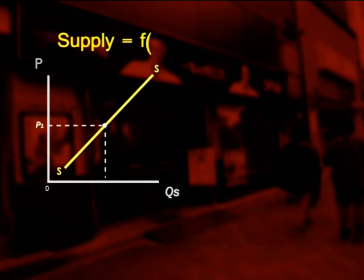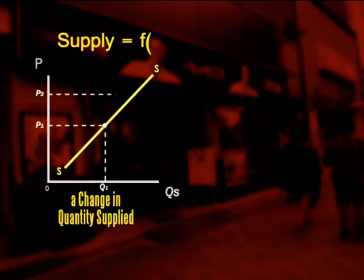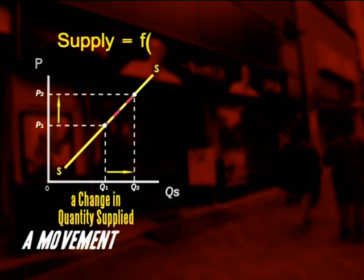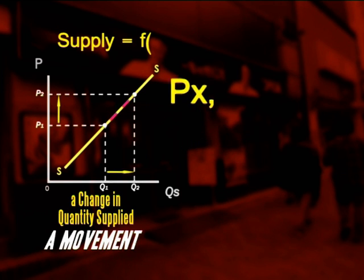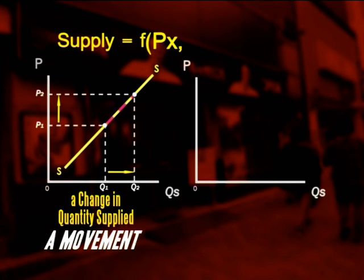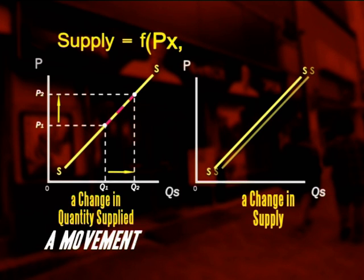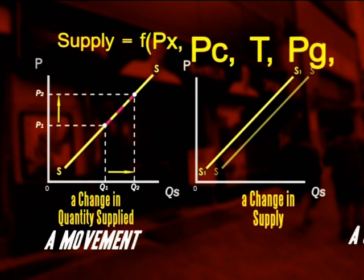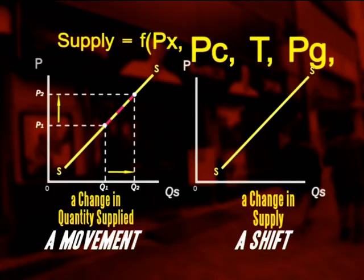Simply remember: a change in price means a change in the quantity supplied, which is a movement along the curve, while a change in any of the other factors causes a shift of the whole curve, reflecting an overall change in supply. Thank you for listening!